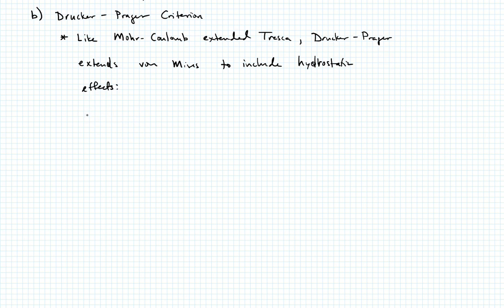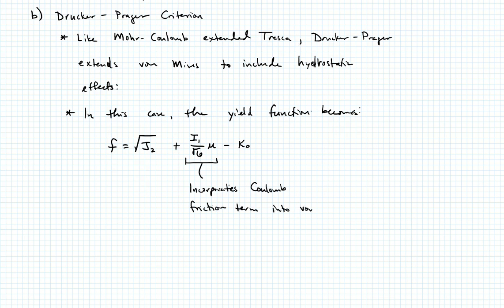I'll just give you the yield function. In this case, the yield function becomes something relatively straightforward. We didn't exactly define von Mises this way. We had a squared term. Originally we had F equals J2 minus K0 squared. Now I'm going to not take the squared components and I'm going to say this is plus I1 over root 6 times mu, another friction coefficient, minus K0. So this quantity here incorporates another Coulomb friction term into von Mises.